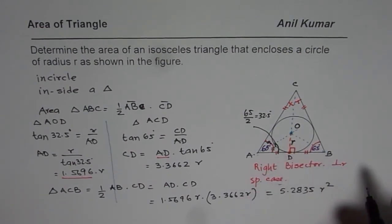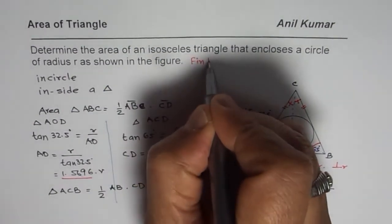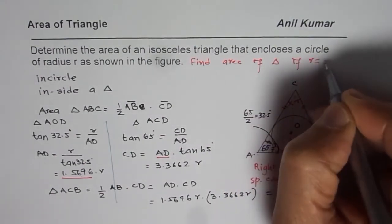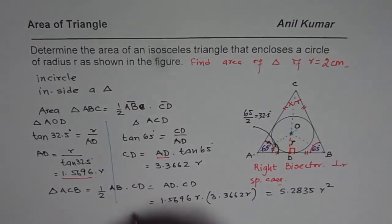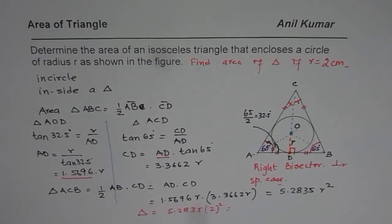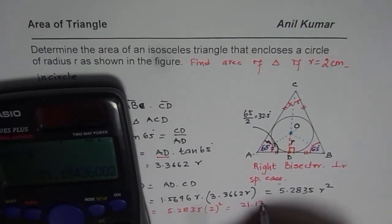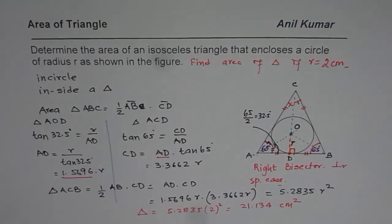As an exercise, you can find the area if R equals 2 centimeters. Just substitute R = 2 into the expression. Area = 5.2835 × 2² = 5.2835 × 4 ≈ 21.134 cm². So you can solve for any given value of R using this general expression.